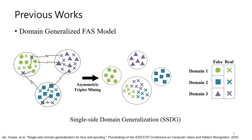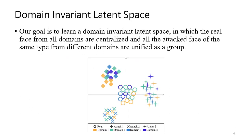To address the cross-domain problem, some studies aim to construct domain generalized FAS models. Currently, the leading domain generalized FAS methods centralize all the real faces of different domains in the latent space and unify the attack faces of different domains into different groups. In this work, we adopt a different strategy to construct a domain invariant latent space, where the real faces from different domains are centralized as well. The difference is that we unify data of the same attack type from different domains into a group, instead of unifying data of the same domains.